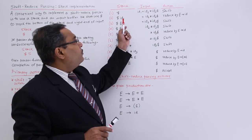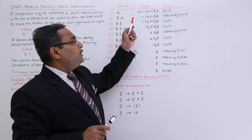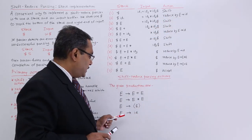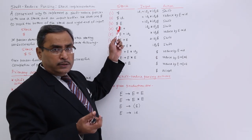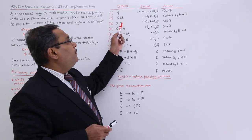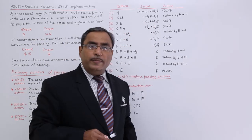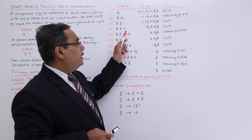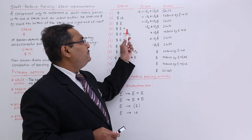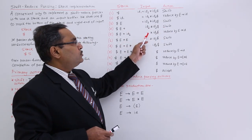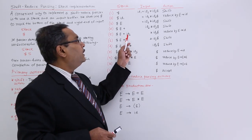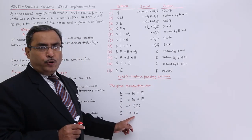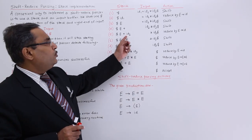The action is shift, so ID1 has been shifted to the stack — shift means pushing it to the top. The next action is reduce by E produces ID: the handle ID is at the top of the stack and is replaced by E, while the input remains intact. The next action is shift, so plus is shifted on top of the stack. Then shift again — ID2 is shifted to the top of the stack. The next action is reduce by E produces ID, production rule 4, so ID2 is replaced by E.